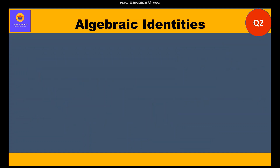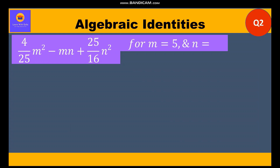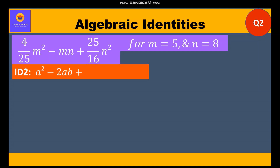Now let's move to the second question. It is given: (4/25)m² - mn + (25/16)n², with values m = 5 and n = 8. Clearly this expression matches identity 2, that is a² - 2ab + b² = (a - b)².